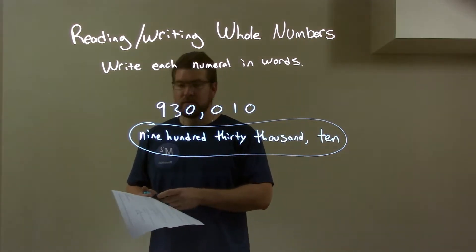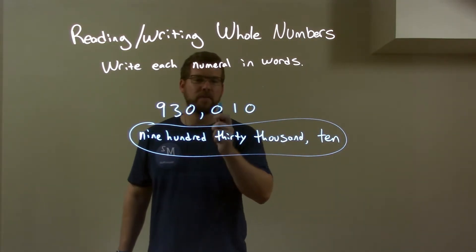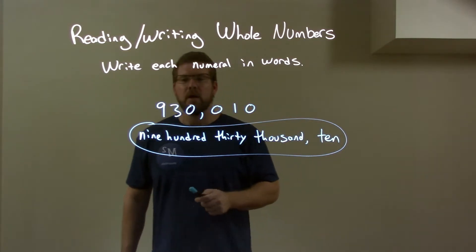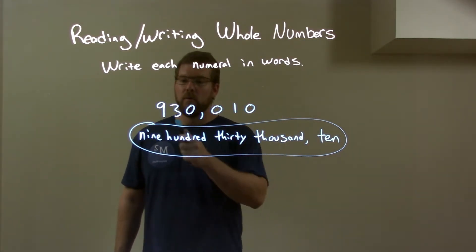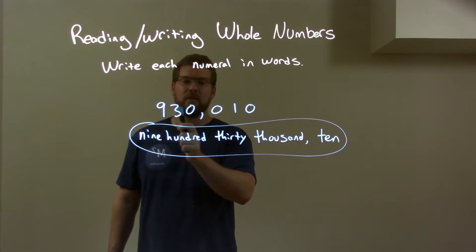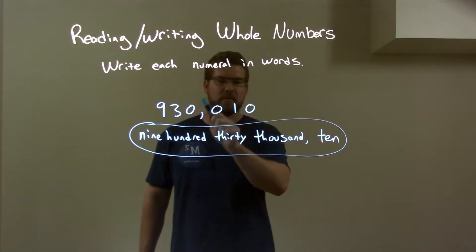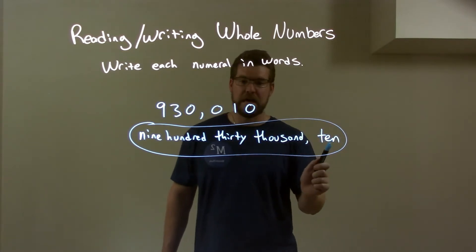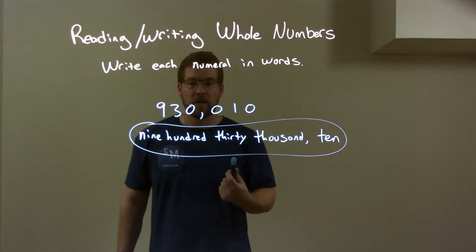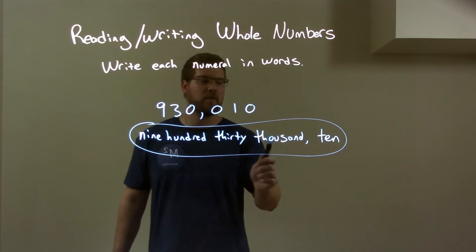Quick recap. We're given 9, 3, 0, 0, 1, 0. We need to write this in words. Well, we first look at the left section and we have 930,000. Then this other section we deal with is just 10. Combine it together to get our final answer, which is 930,000, 10.